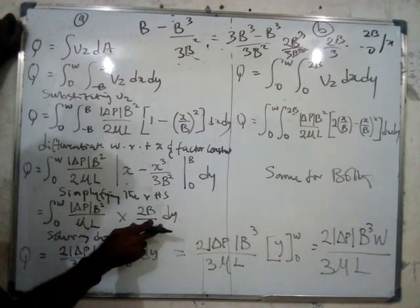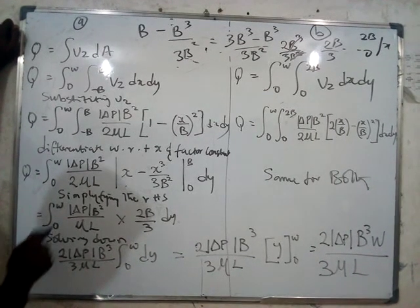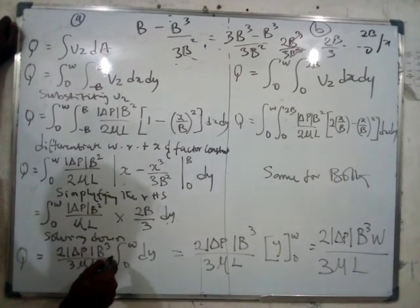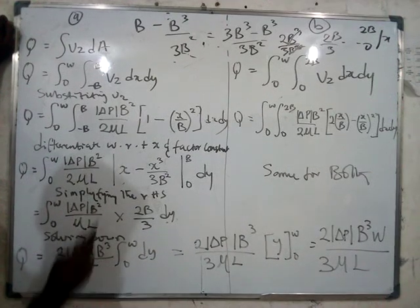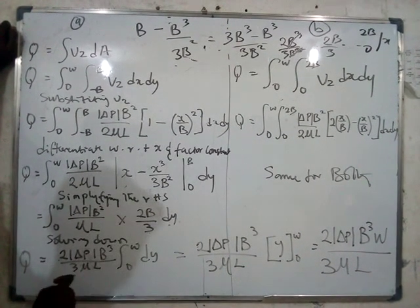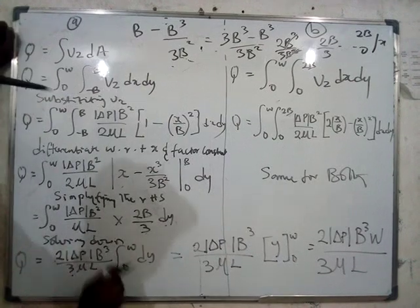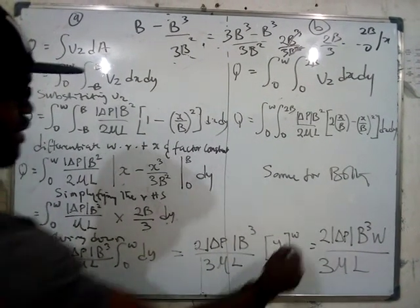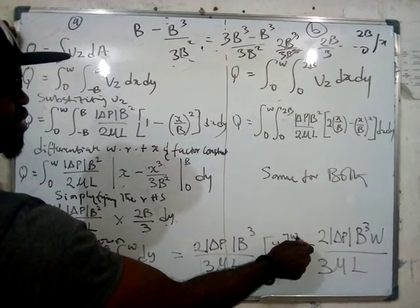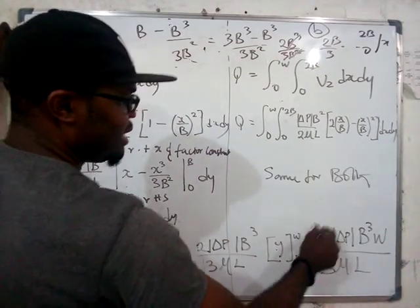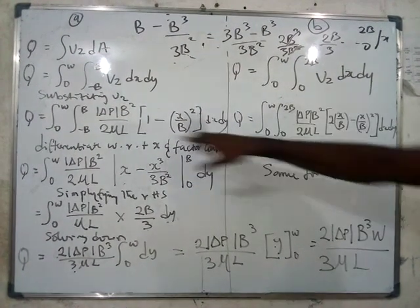You can see that you still have an integral here with respect to y. Nothing is in terms of y — everything here is constant — so you just multiply. When you wrap the integral around this and integrate only y, you get just y, and you take the boundaries w and zero. Zero drops out, so in place of y you put w. That is how you arrive at this final expression.